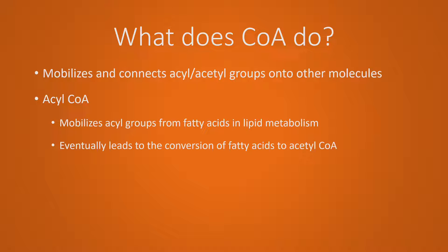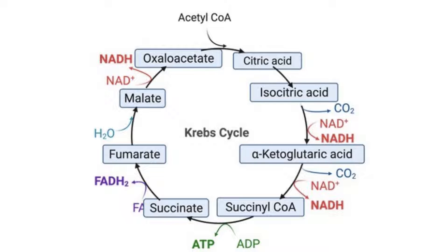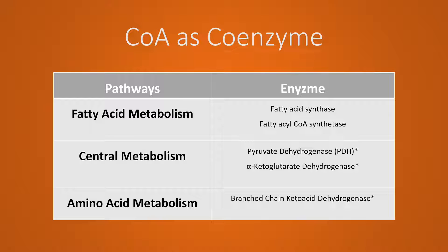Acyl-CoA is usually formed during the mobilization of lipids. When a CoA molecule attaches onto the acyl groups of the fatty acid, it allows it to be metabolized and eventually broken down to acetyl-CoA, where it can join the central metabolic pathway to make energy. The CoA in acetyl-CoA helps the acetyl group join into the oxaloacetate compound so that it can enter the Krebs cycle. Let's take a look at all the different pathways that CoA takes part in. First is fatty acid metabolism, in which CoA is required by the enzymes fatty acid synthase and fatty acyl-CoA synthetase. In the central metabolism, CoA is required by pyruvate dehydrogenase and alpha-ketoglutarate dehydrogenase. Also, CoA is required in amino acid metabolism by the enzyme branched-chain ketoacid dehydrogenase.